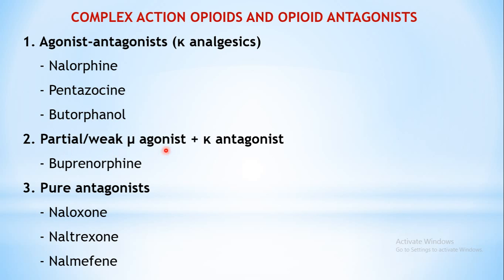The second class is partial or weak mu agonist plus kappa antagonist. In this class, buprenorphine has partial or weak mu agonistic property, so it will produce analgesic effect through interaction with the mu receptor - similar to morphine. But at the same time it has kappa antagonistic action, meaning it can block the kappa type of opioid receptor. So the properties will not be the same as morphine but will be different.